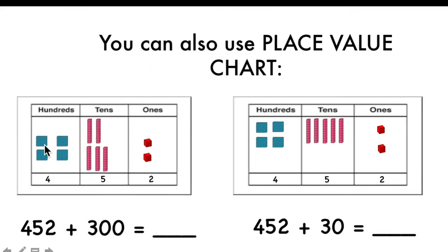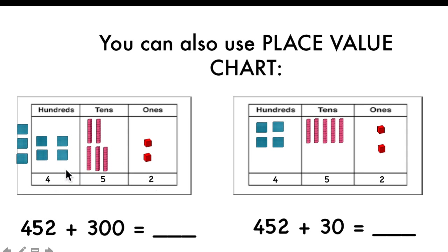One more time. Here we have four hundred fifty-two. Now, I'm going to add three hundred more. I will add three hundred to the hundreds blocks. Which digit will change? The hundreds digit, which is the four. The five and two stay the same. So, only number four will change — it will be seven. The final answer will be seven hundred fifty-two. The tens and ones do not change; they stay the same.